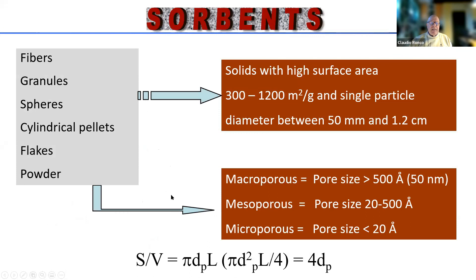Sorbents can come in fibers, granules, spheres, pellets, flakes, or powder. Most of the sorbents we use for extracorporeal blood purification today are granules like beads in the range of approximately 200 microns. They are solid with high surface area and have a range of 300 to 1200 square meters per gram of substance.